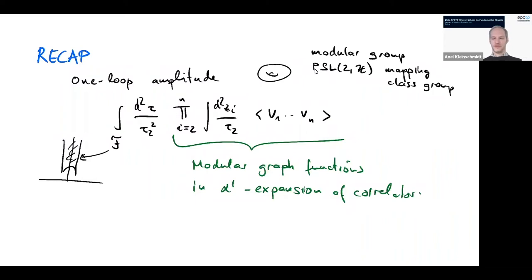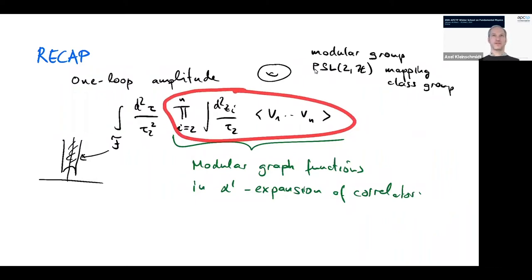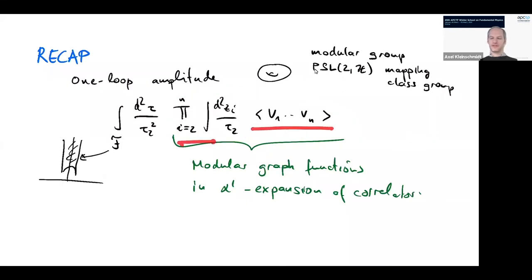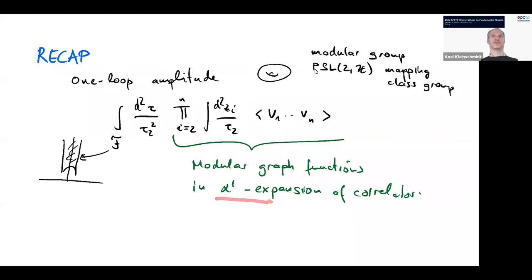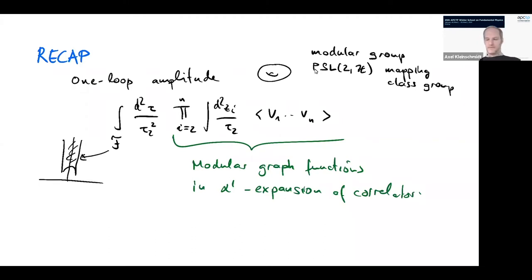There is the integral over what comes from the CFT correlator once you integrate over the different punctures. This is the CFT correlator; this is the integral over the punctures. As I was explaining yesterday, in this case it's not possible to do the calculation in closed form in alpha prime — nobody knows how to do it. There's no no-go theorem, but it's not known. So people resort to the alpha prime expansion of the CFT correlator to do the integral over the punctures. The resulting object — the configuration space integral — can be depicted graphically, which is why it's called the modular graph function. That was the story at one loop yesterday.